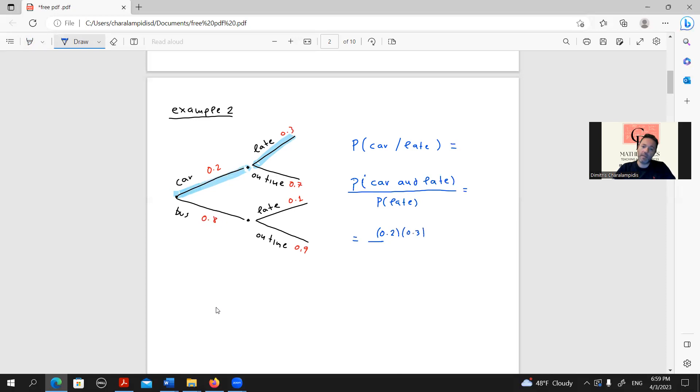The probability of late is the probability of a specific outcome. So, we need to calculate all roads that lead to late. It could be this and that, or bus and late.